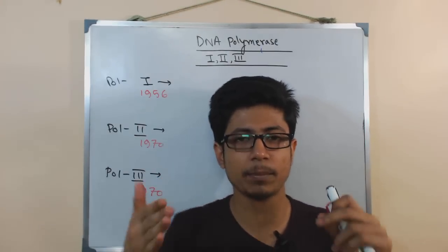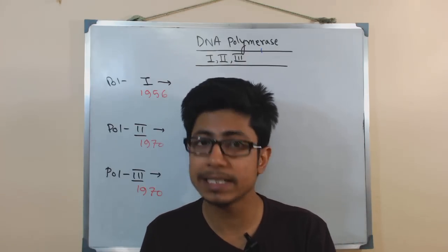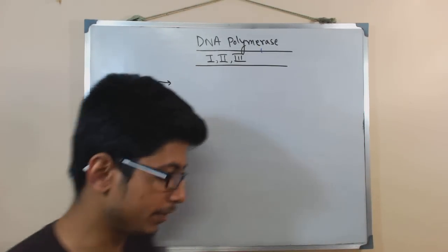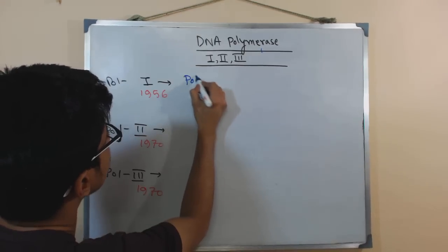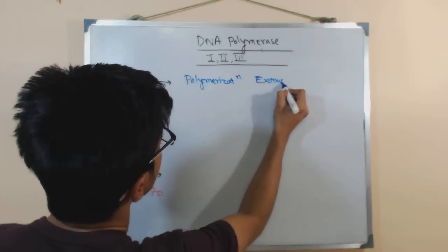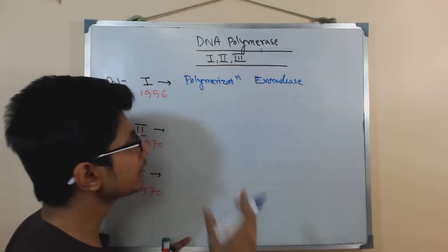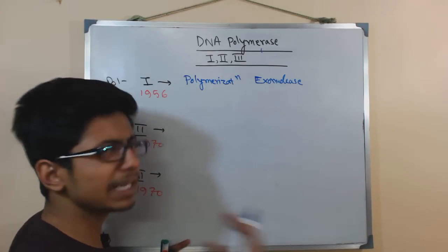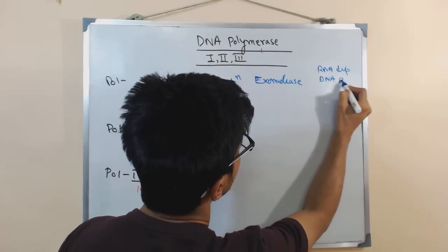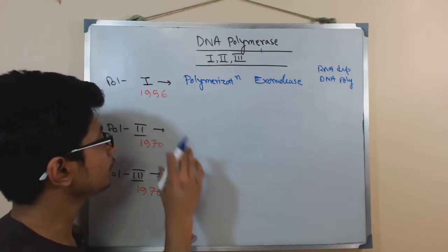Polymerase 1 has two activities: polymerization activity, which is common to all three types, and exonuclease activity. But polymerase 1 also has a special activity called RNA-dependent DNA polymerization. This RNA-dependent DNA polymerization activity is very unique to polymerase 1 and is not found in polymerase 2 or 3.